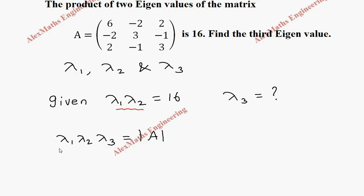Already lambda 1 into lambda 2 is 16, so let's substitute lambda 1 into lambda 2 here as 16, and lambda 3 we will keep as is, which is equal to the determinant. We are going to expand along row 1, so take the first element 6.